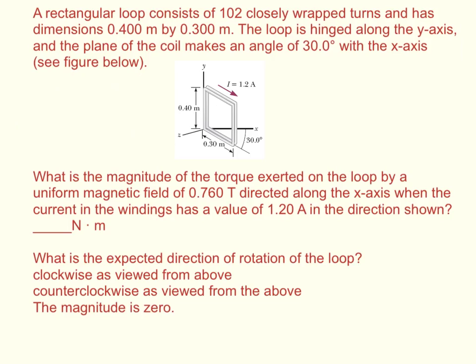What is the magnitude of the torque exerted on the loop by a uniform magnetic field of 0.76 tesla directed along the x-axis when the current in the winding has a value of 1.2 amps in the direction shown?